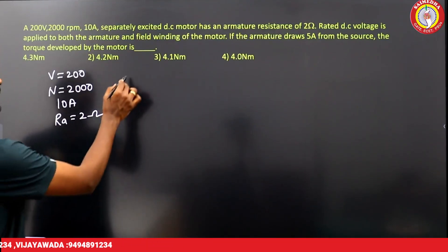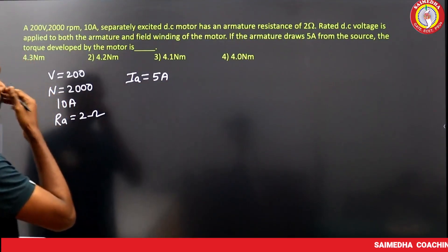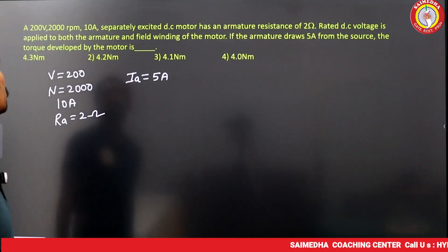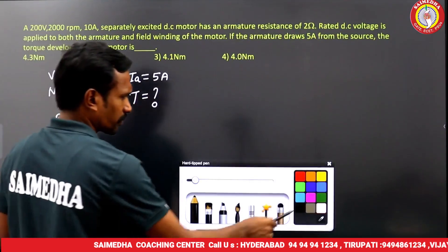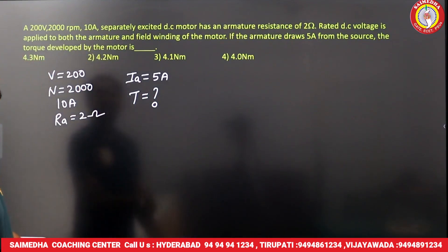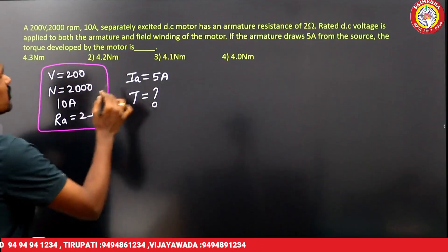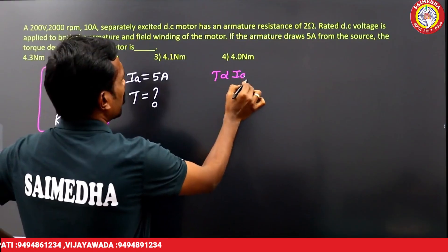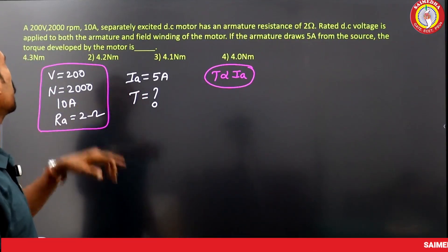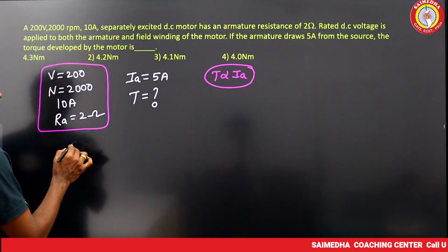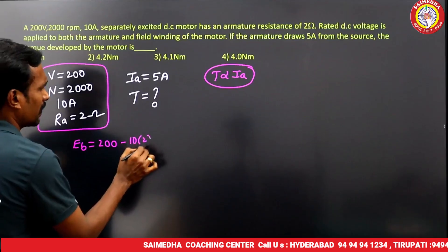Rated DC voltage is applied to both armature and field. Initially the armature current is 10 amperes; if it changes to 5 amperes, what is the torque developed? Since torque is directly proportional to Ia, we can first calculate torque at 10 amperes. Eb = V − Ia × Ra = 200 − (10 × 2) = 180 volts.